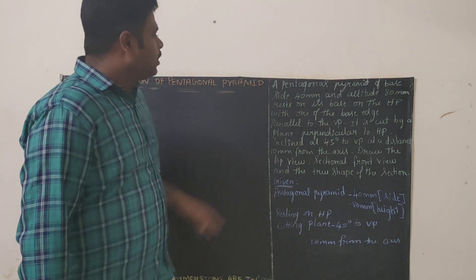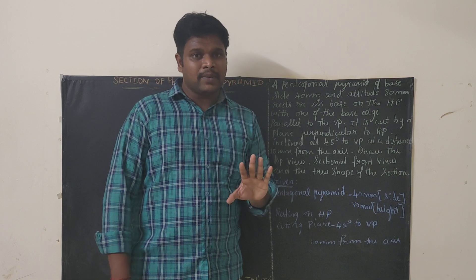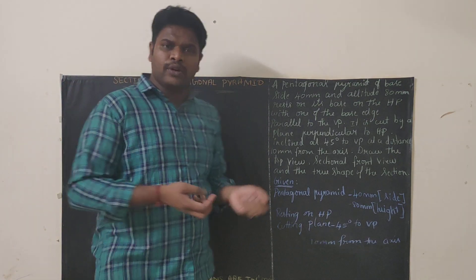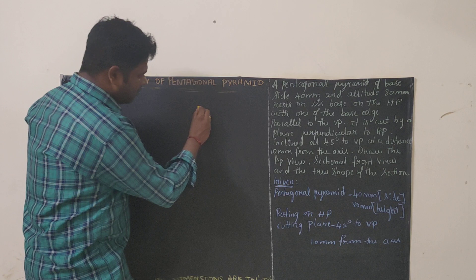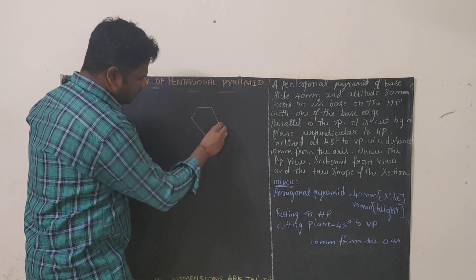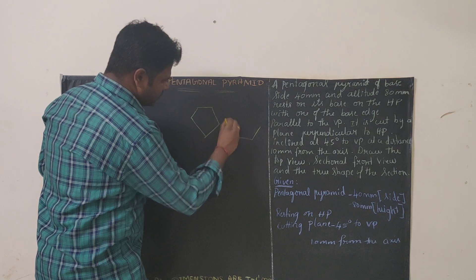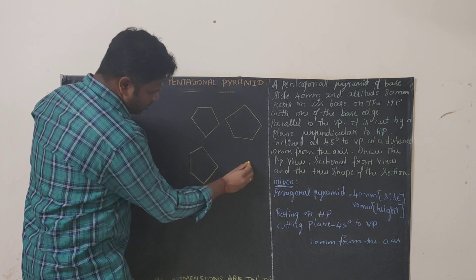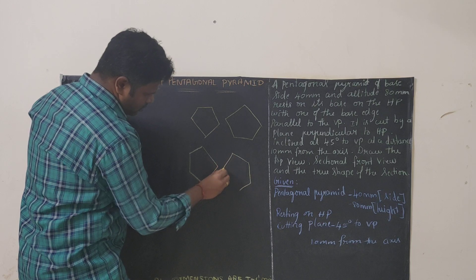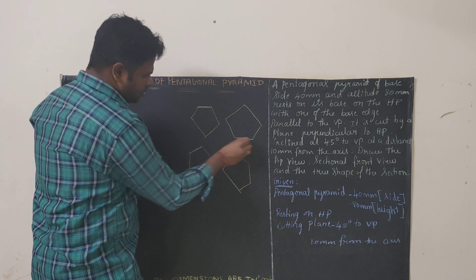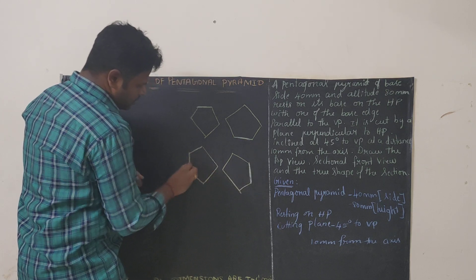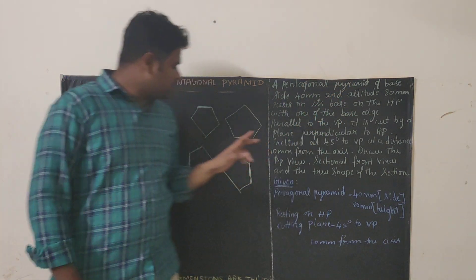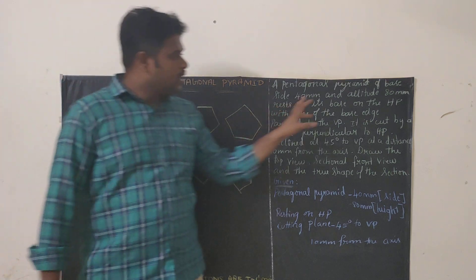So let us go into the problem. A pentagonal pyramid — the solid is a pentagonal pyramid, so the base diagram will be a pentagon. A pentagon can be drawn in a number of ways: you can keep the base here and draw the pentagon like this, or like this. A pentagonal pyramid of base side 40 mm — so each base side will be 40 mm — and altitude 80 mm, so height will be 80 mm.